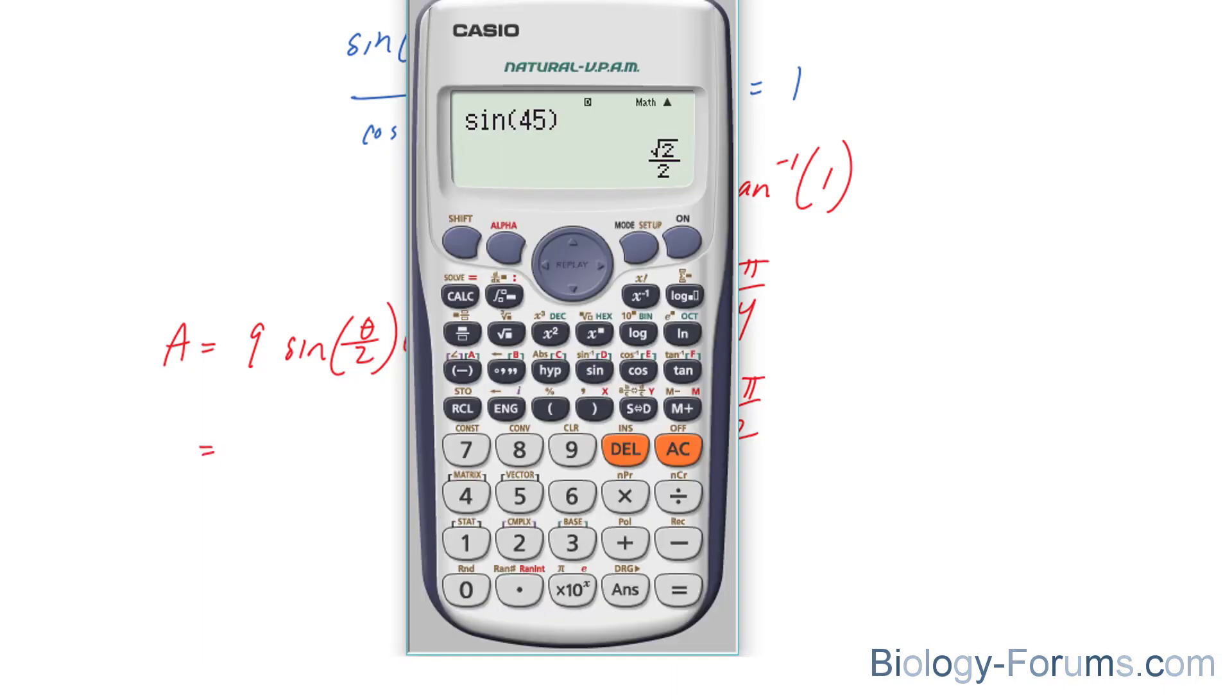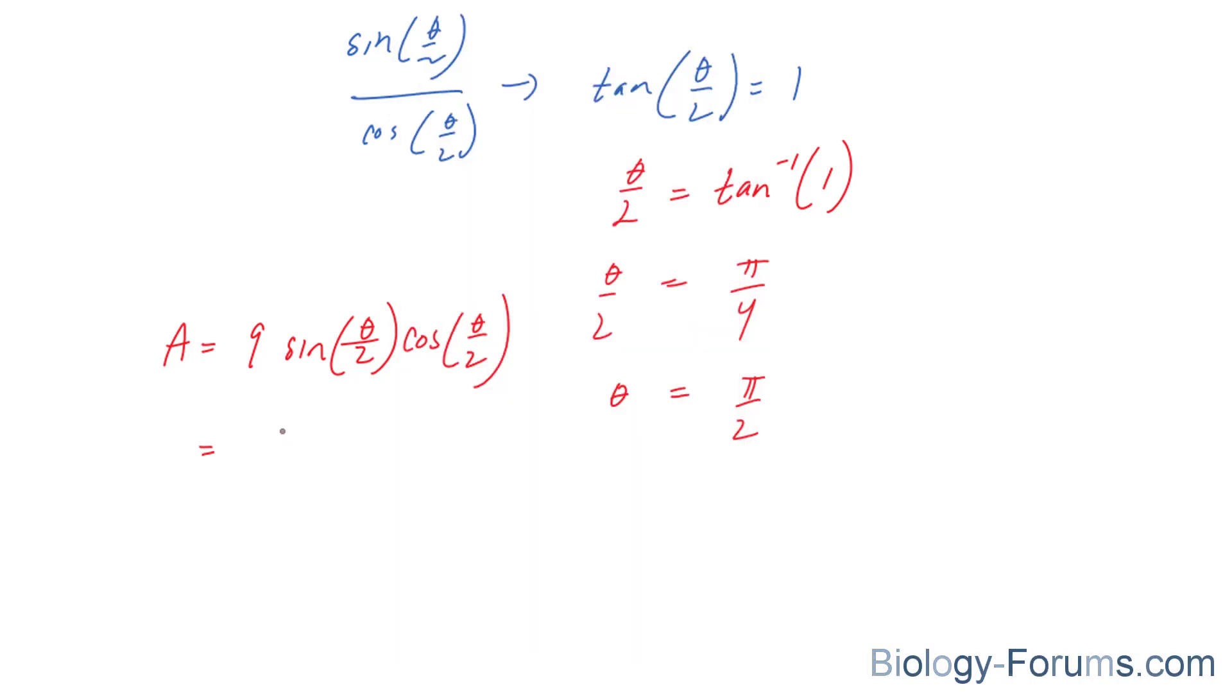Let's plug this number in into our theta. We end up with, make sure your calculator is in radians, times cosine pi divided by two over two. And the answer we get is nine over two.